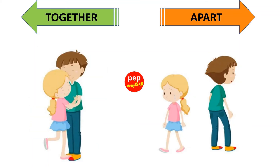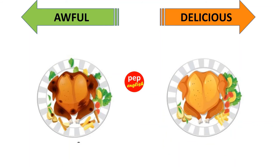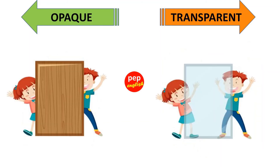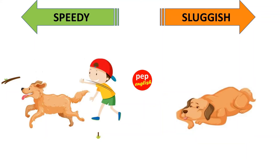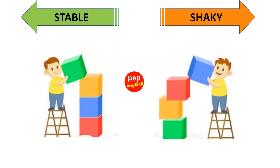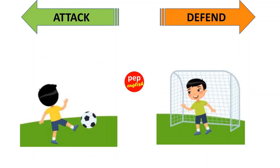Awful, delicious. Soaked, dry. Opaque, transparent. Speedy, sluggish. Ancient, new. Stable, shaky. Attack, defend.